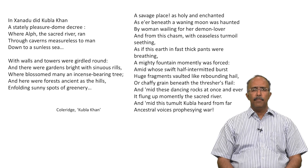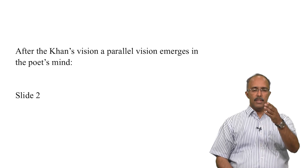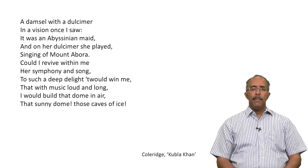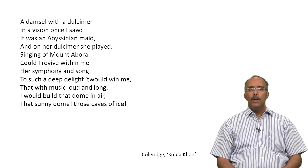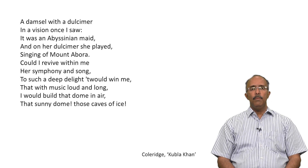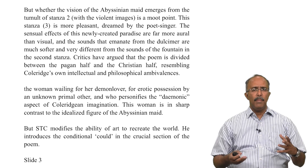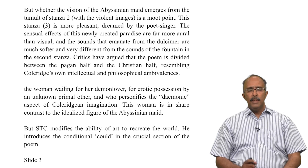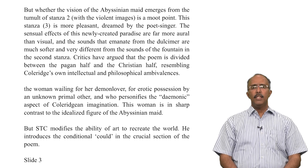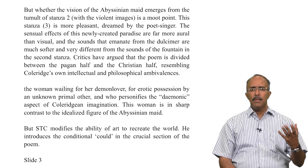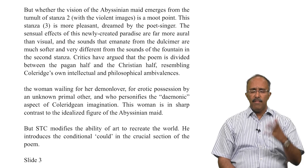After that, a parallel vision emerges in the poet's mind. 'A damsel with a dulcimer in a vision once I saw. It was an Abyssinian maid and on a dulcimer she played, singing of Mount Abora. Could I revive within me her symphony and song, to such a deep delight would win me, that with music loud and long I would build that dome in air, that sunny dome, those caves of ice.' This stanza is more pleasant in a dream state, and the sensual effects of this newly created paradise are far more aural than visual. The sounds from the dulcimer are softer and different from the sounds of water flowing down the mountain.